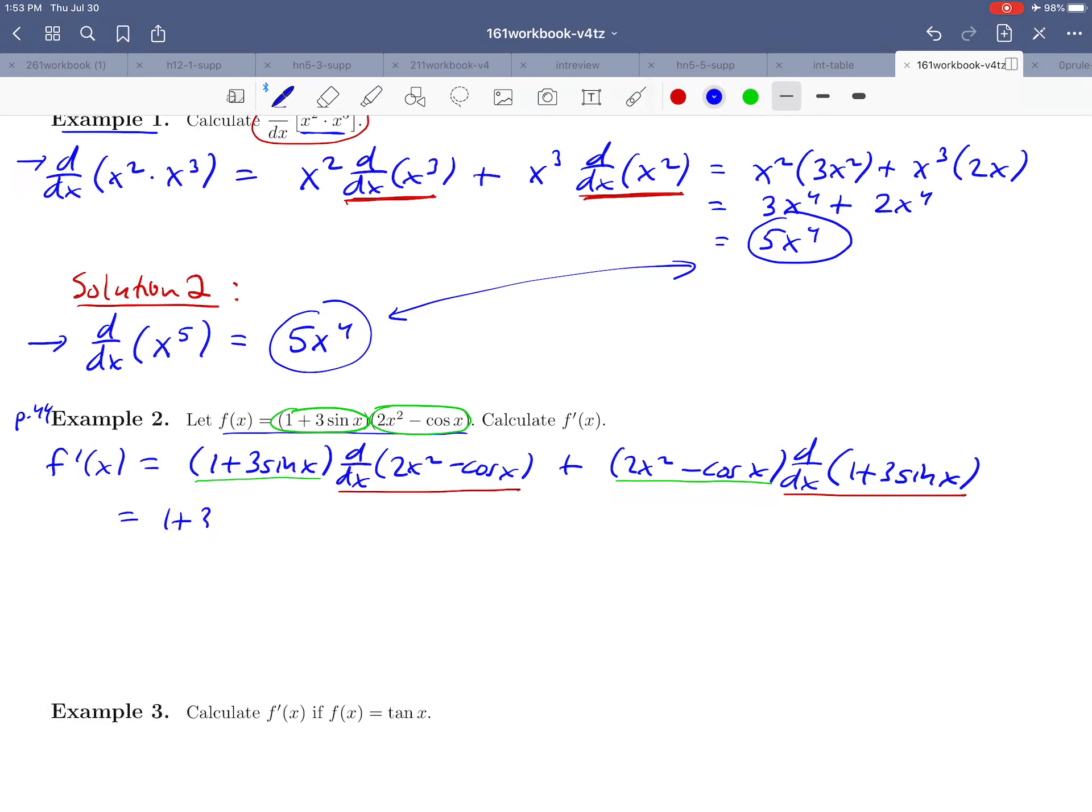Let's rewrite the (1 + 3 sin x) that we're done with. Then how do we take the derivative of this 2x² - cos x? Well, the derivative of the 2x² by the power rule, that's just going to be 4x. Then what about the derivative of minus cos x?